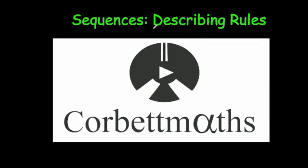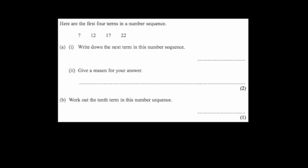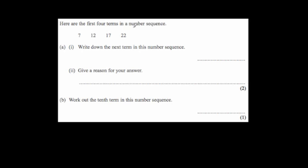In this video we're going to look at sequences and describing their rules. Here's a question: the first four terms of a number sequence are 7, 12, 17, 22. Write down the next number in this sequence. Whenever you're looking at a number sequence like this, the most important thing is to find the rule. To get from 7 to 12 you add 5.